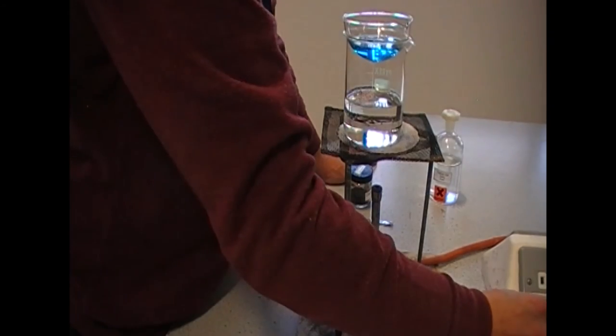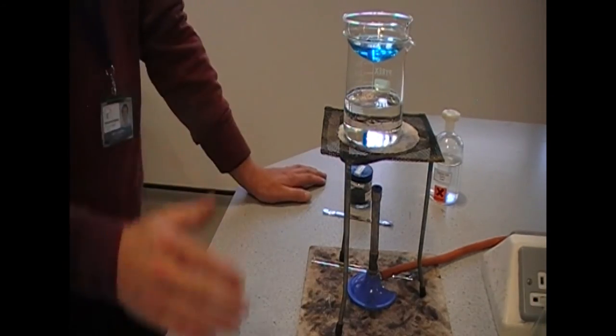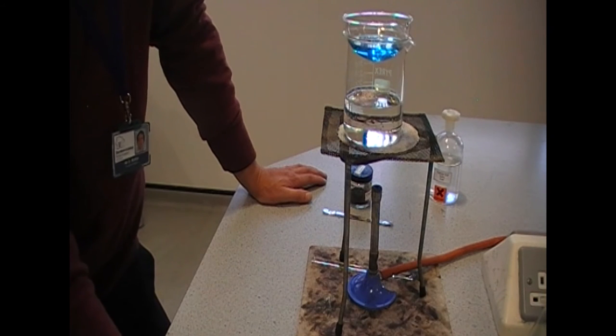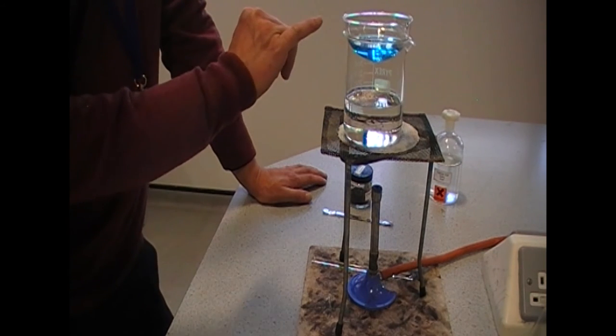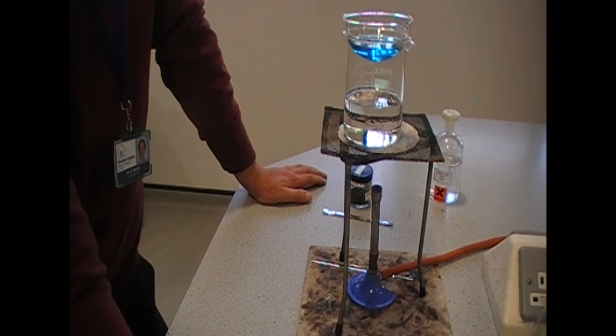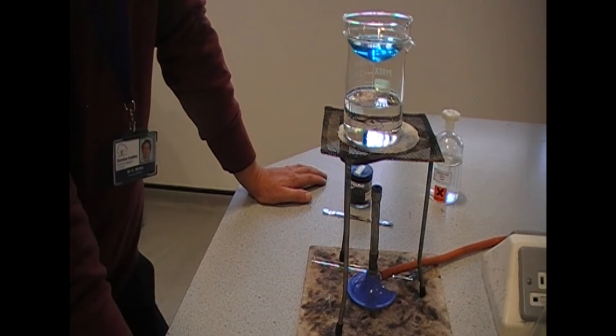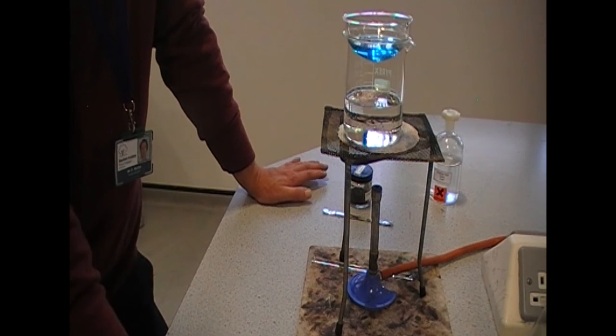Now, pour the contents of the conical flask into your evaporating dish. And now, if you leave that steam from the water bath will then be able to heat this solution and gently, with a bit more control, evaporate away most of, about half of the water.